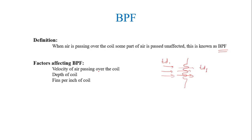There are various factors or reasons behind this loss — the velocity of air, depth of coil, and fins per inch of the coil. First, the velocity of air: when the velocity of air passing over the cooling coil is more, the bypass factor will be more, because when the velocity is higher, the air will be in contact with the coil for less time, and hence the bypass factor will be more.